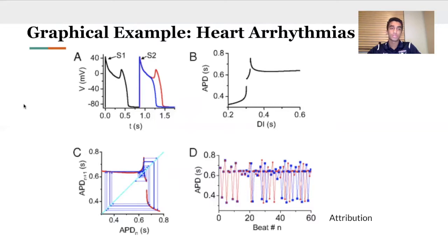Here's an example of heart arrhythmias. We have systolic versus diastolic pressure in model A, C is a cobweb plot, and D is a time series of a heart beating over time.